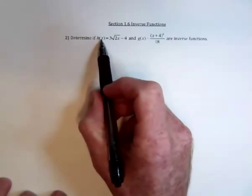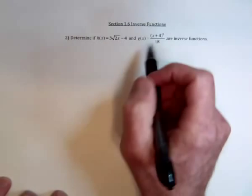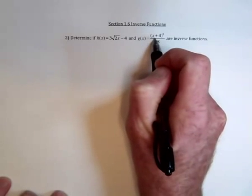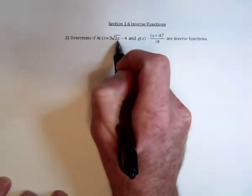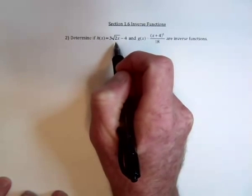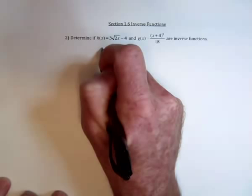In order to verify that two functions are inverses of each other, we need to take one function, substitute it into the other function, and see if the operations cancel, giving us just x. Or in other words,